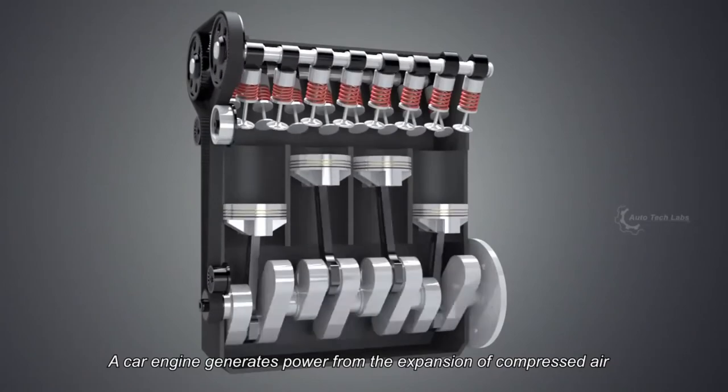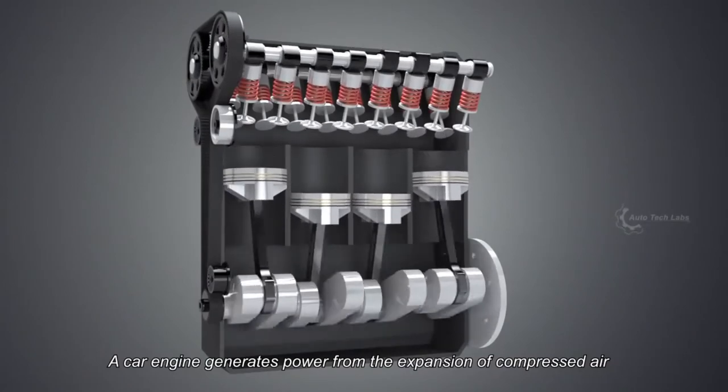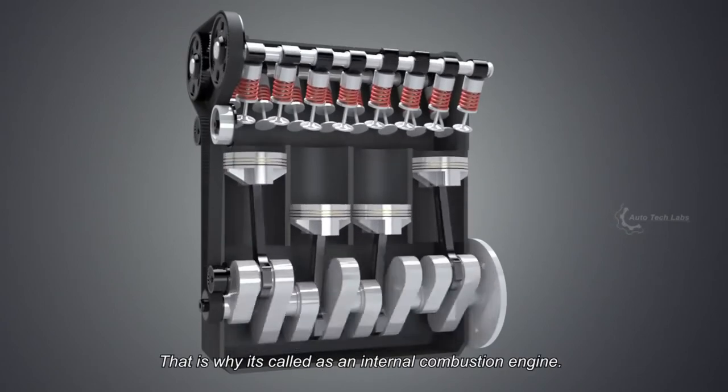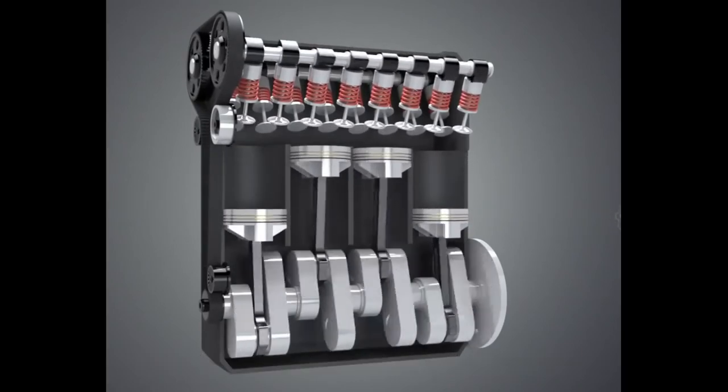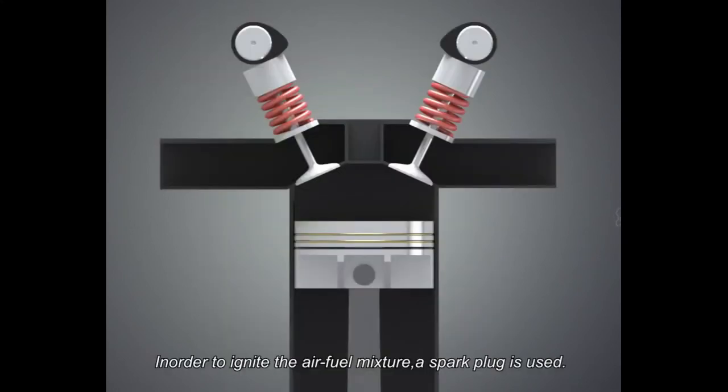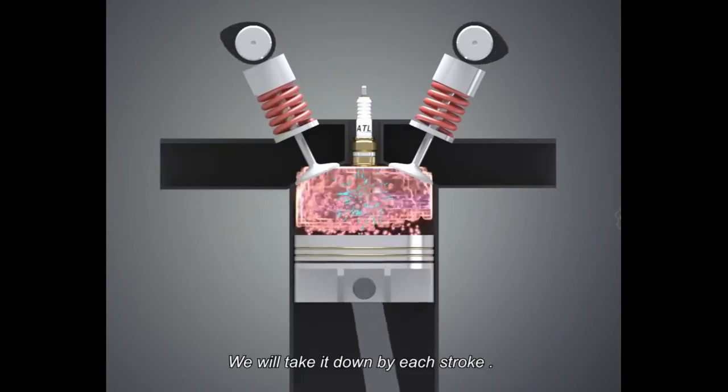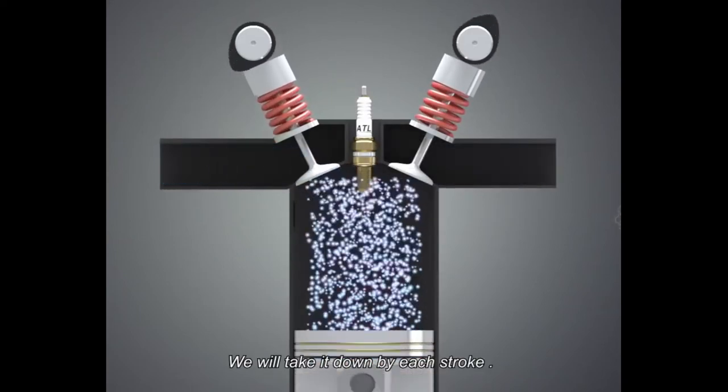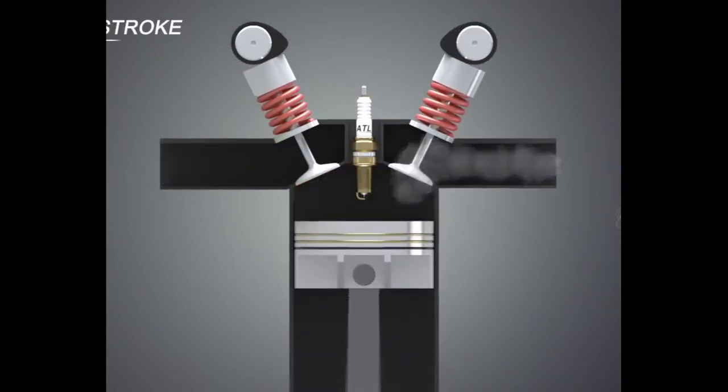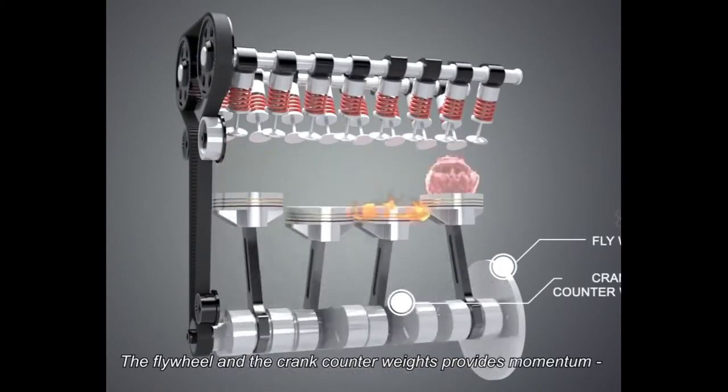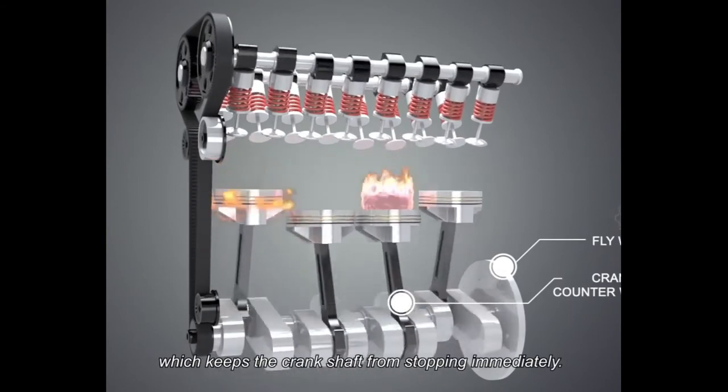An engine generates power from the expansion of compressed air in a contained cylinder with the help of fuel. That is why it's called an internal combustion engine. In order to ignite the air-fuel mixture, a spark plug is used. This will ignite the compressed air-fuel mixture with the help of an electrical spark. The flywheel and the crank counterweights provide momentum, which keeps the crankshaft from stopping immediately.